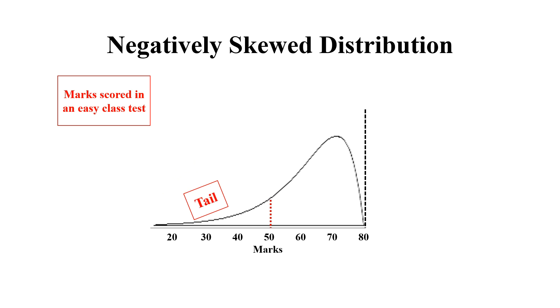We see the tail here as well, but this time it appears on the left-hand side of the central value. Since it's skewed to the left-hand side of the central value, we can say that the data is negatively skewed.